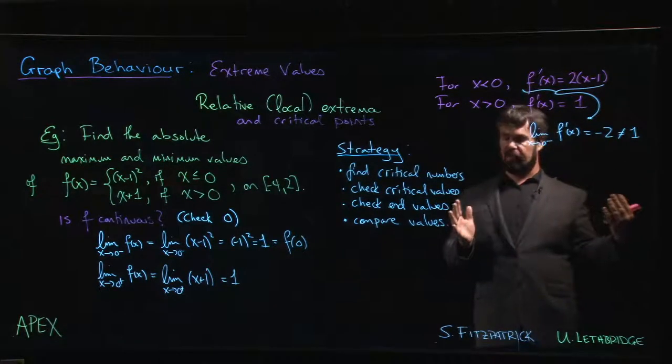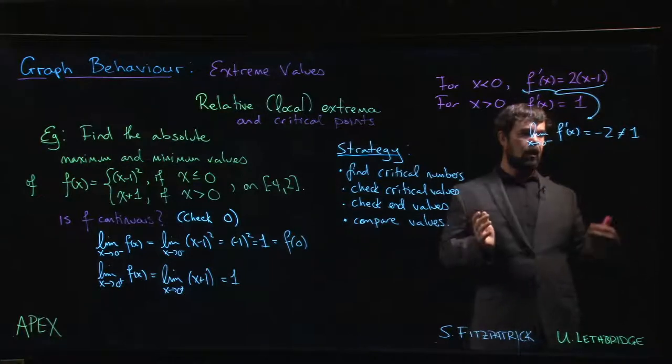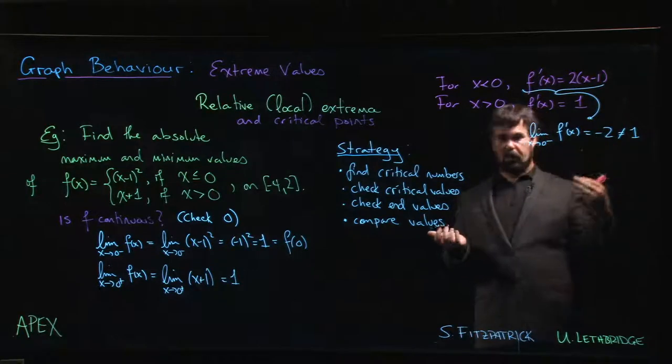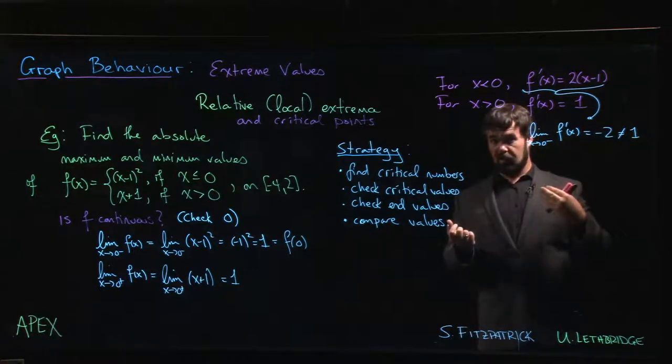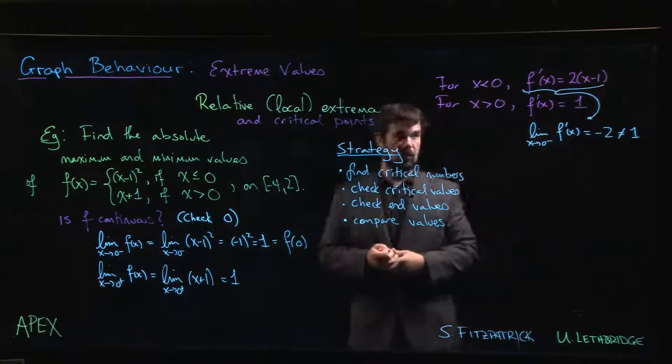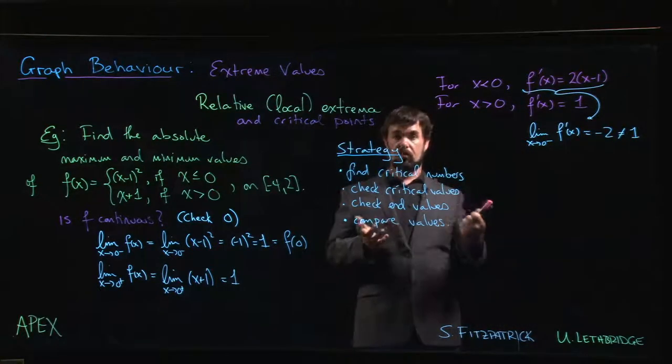If you wanted to make absolutely certain, yes you could go to the definition, but the definition is going to tell you the same thing. The limit doesn't exist. The left hand limit is going to be minus 2, the right hand limit is going to be 1, so derivative is undefined. That means that 0 is a critical number.